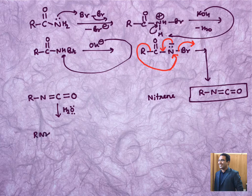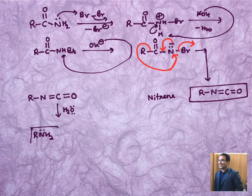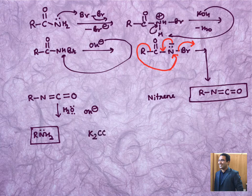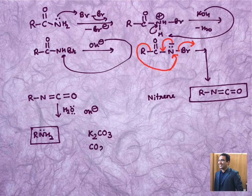We can expect formation of R-NH2 through this way. If it is basic medium with OH minus presence, you can expect byproduct as K2CO3, and if it is only water you can expect product as carbon dioxide as well. In this reaction the rearrangement which is taking place at this particular location is also known as Wolf rearrangement.